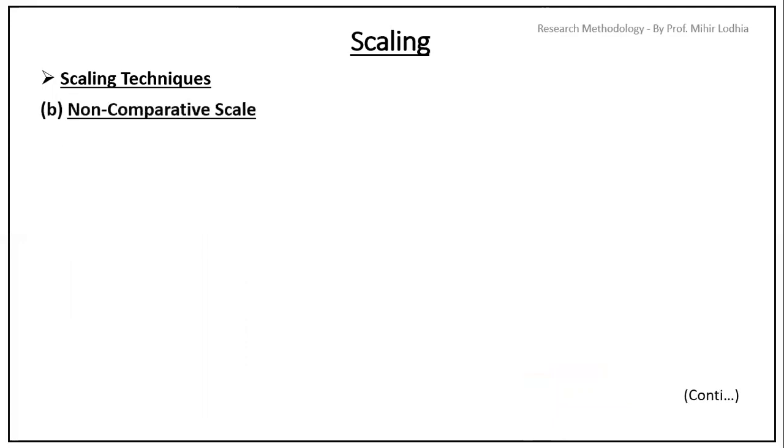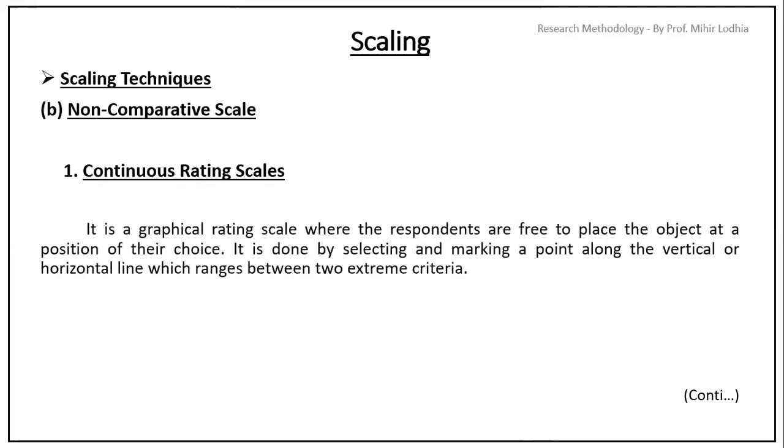So, in scaling technique, now for comparative one, the next one and the last one is non-comparative scale. Here, two scaling techniques are there. First, continuous rating scale. It is a graphical rating scale where the respondents are free to place the object at a position of their choice. It is done by selecting and marking a point along the vertical or horizontal line which ranges between two extreme criteria.